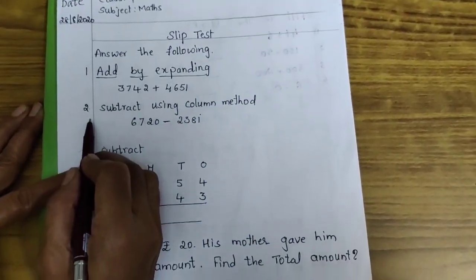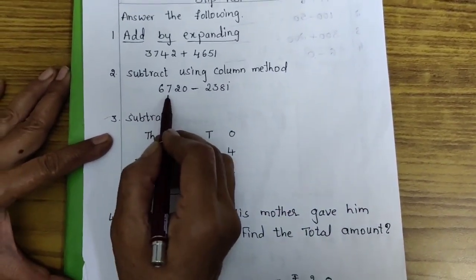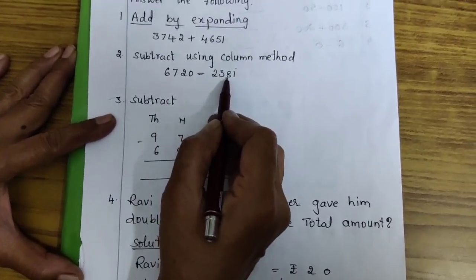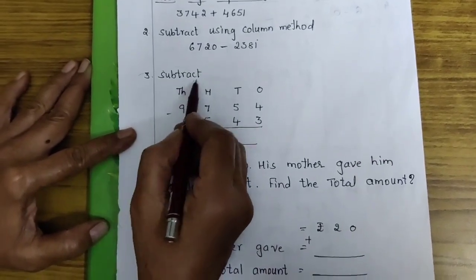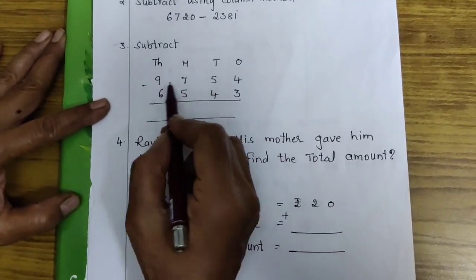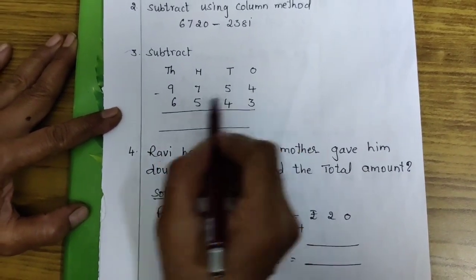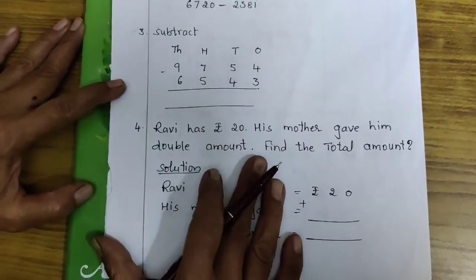Next, second question. Subtract using column method. 6,720 minus 2,381. Next, third question. Subtract. These numbers you have to subtract. 9,754 in that minus 6,543 find the answer.